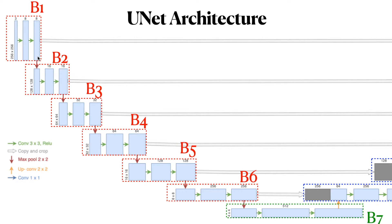The max pooling layer extracts the more important features from the previous feature maps. After passing through it, the image size reduces from 256×256 to 128×128. We take the feature maps and pass them through two 3×3 convolutional layers, now getting 16 feature maps at box 2. We repeat similar operations from B1 to B6. At box 7, we take the feature maps from B6 and pass them through a max pooling layer, resulting in an image size of 4×4 with 256 filters. This is our bottleneck.